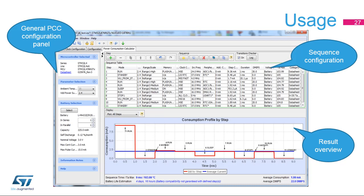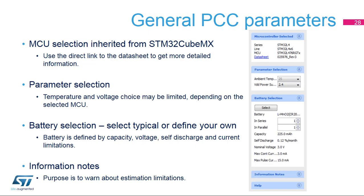The power consumption calculator is the fourth tab in the STM32CubeMX main window. The window is divided into several panes. The general configuration pane summarizes the typical operating conditions and the MCU type currently selected. The second pane displays the simulation sequence and its controls — there is no button to execute the simulation, as the results are available instantly. The general PCC configuration pane is mostly informative, summarizing the selected MCU and the default power source. Parameters such as temperature and voltage may also be defined. The battery selection pane is used to select or define a battery type, which is optional and may be used in only selected sequence steps, simulating a device that works both independently and connected to an external power source.